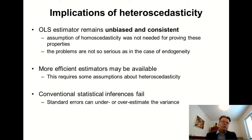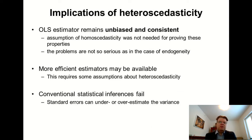What are the two adverse consequences of heteroscedasticity? Firstly, there may be more efficient estimators than OLS if we explicitly model the heteroscedasticity, which I will discuss in later lessons. But perhaps even more serious is that heteroscedasticity affects the standard errors we calculate — they might overestimate or underestimate the variance. As a result, the statistical tests and confidence intervals are no longer reliable. For many purposes, the failure of statistical inference can be a more serious consequence of heteroscedasticity — it's not so much affecting the point estimates, but for inferences it can be detrimental.